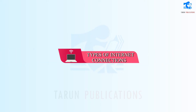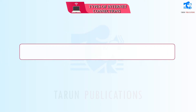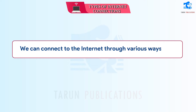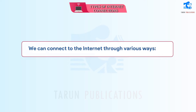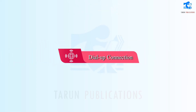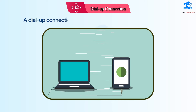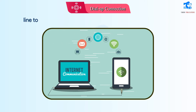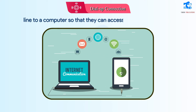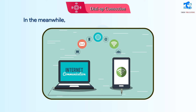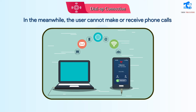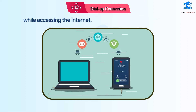Types of Internet Connections. We can connect to the internet through various ways. Dial-up Connection: A dial-up connection requires the users to connect their phone line to a computer so that they can access the internet. The user cannot make or receive phone calls while accessing the internet.